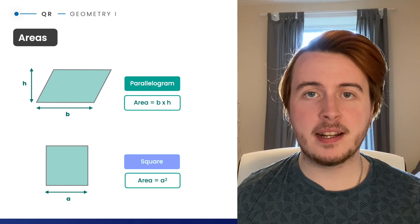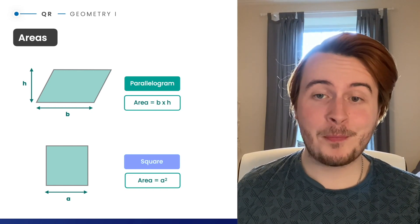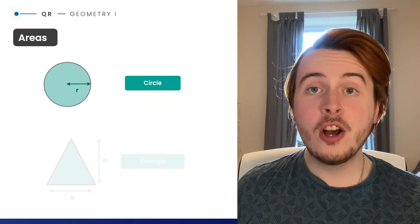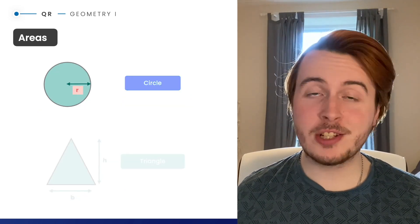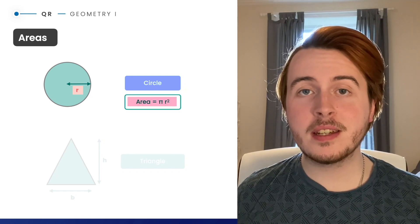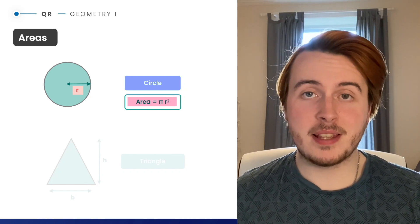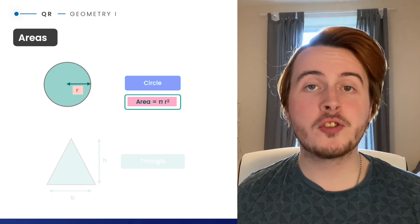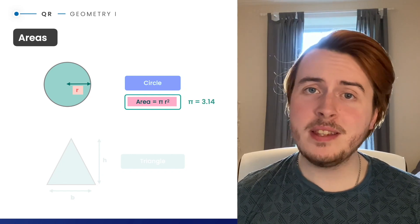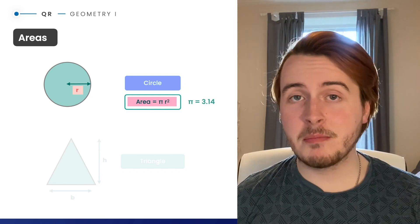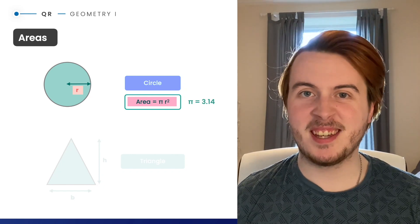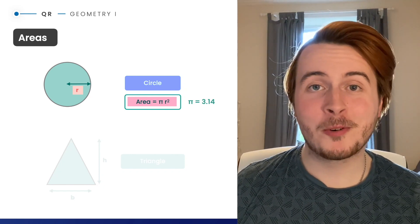For a square — another type of parallelogram — if we call one side 'a', the area is simply a squared. For a circle, we have the age-old formula: area equals pi r squared. In the UCAT, you only need to use 3.14 — there's no pi button on the calculator. Just memorize 3.14; there's no point using 3.14159. Use 3.14 in quantitative reasoning.